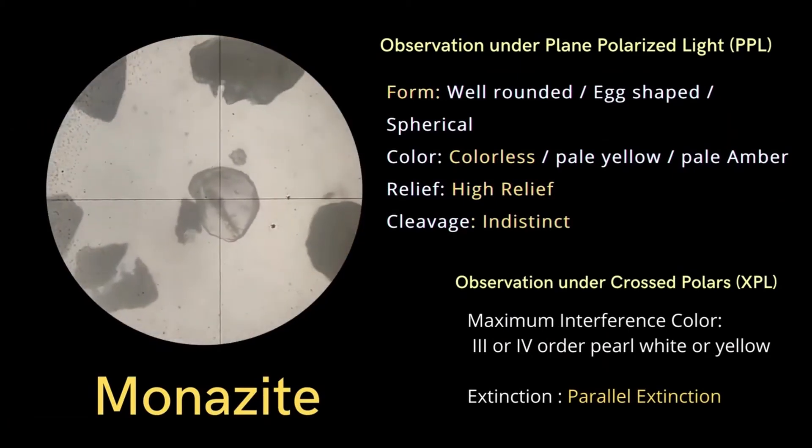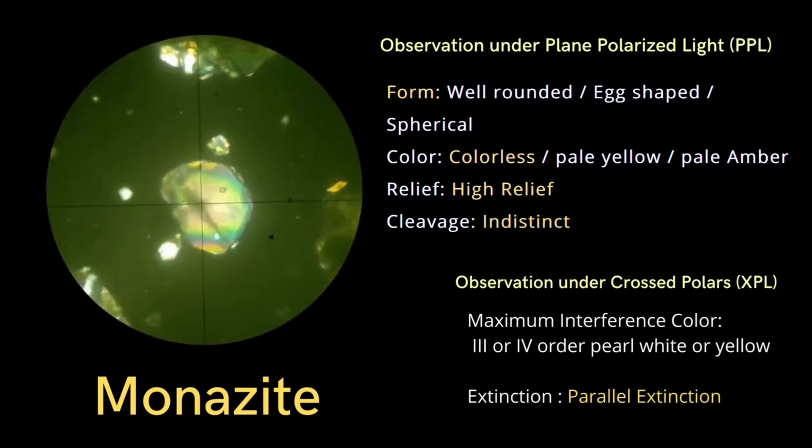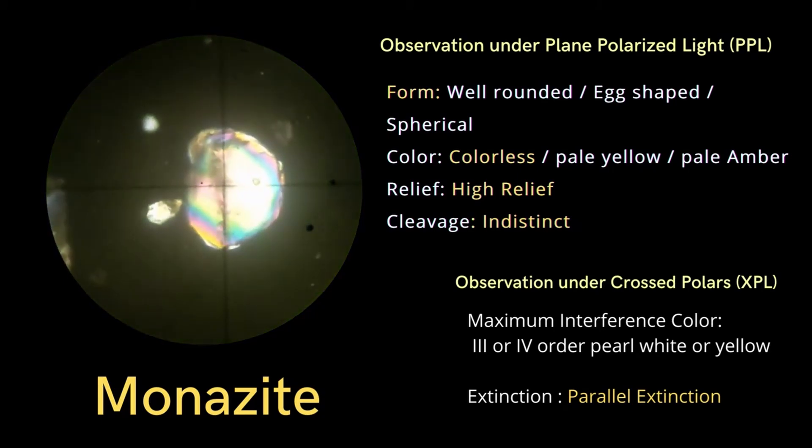The cleavage is generally indistinct. Switching to crossed polars, Monazite shows a maximum interference colour in the third or fourth order, typically appearing as pearl white or yellow.